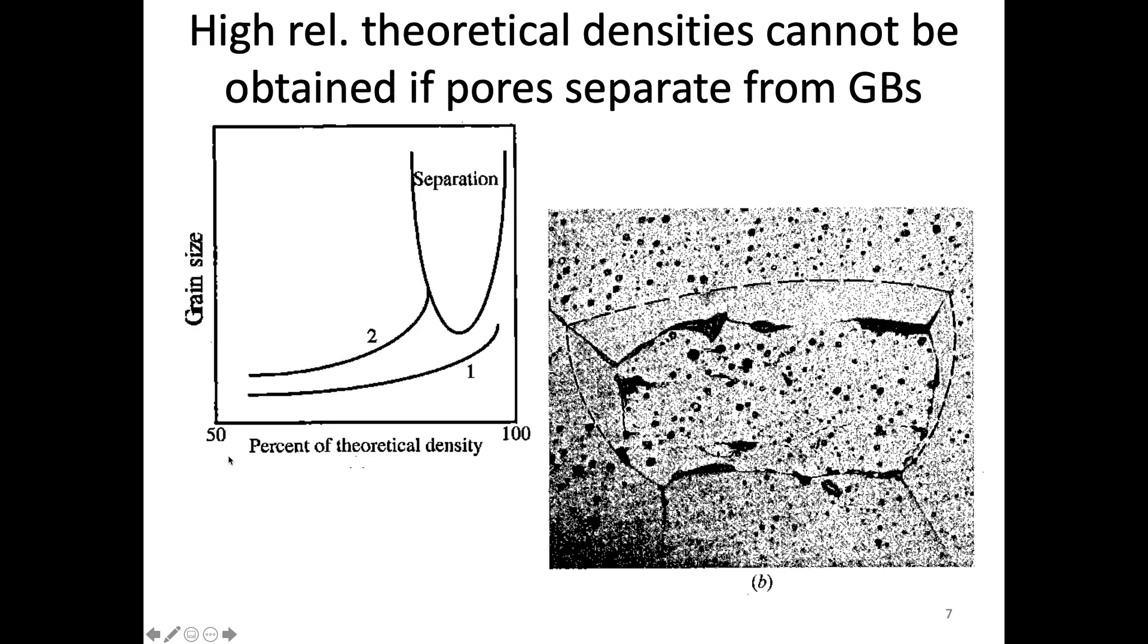So again, we show the grain size versus percent theoretical density. And in case two, this is where the grain size is increasing too much and it reaches this sort of region here, which leads to separation. So basically this is kind of showing that if the grain size increases too fast, it can reach this sort of case where the pores separate from the grain boundaries. So what we need is suppressed grain growth by keeping down on the y-axis and that surpasses the sort of separation and it allows us to remove that porosity while it's still on the junction points.